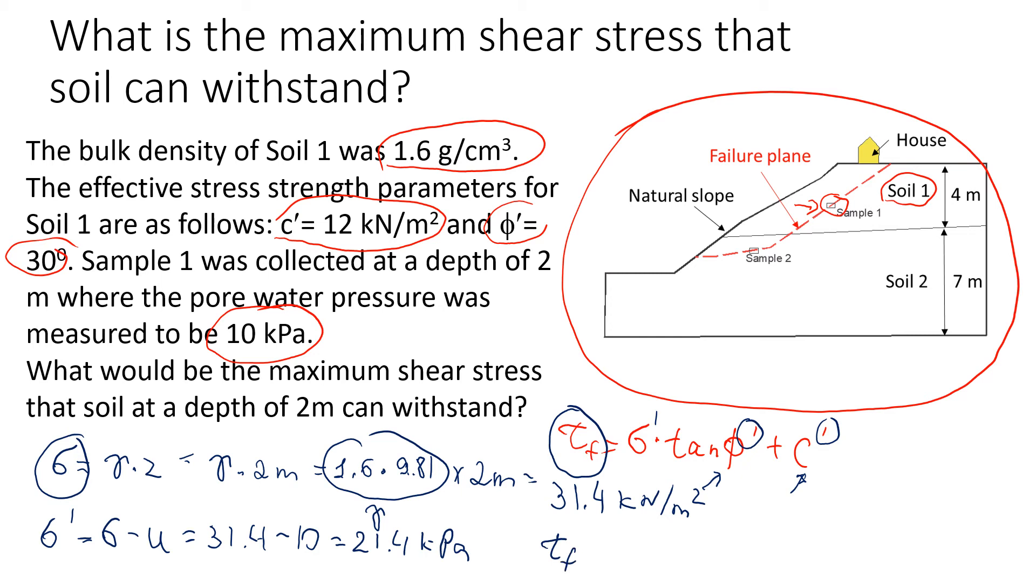Now we can estimate the maximum shear stress that soil can withstand. Maximum means that soil will undergo failure, so that's why I put here f - f stands for failure. We're going to put in the numbers. We know that the effective vertical stress is 21.4 times the tangent of the friction angle, and the friction angle is 30 degrees.